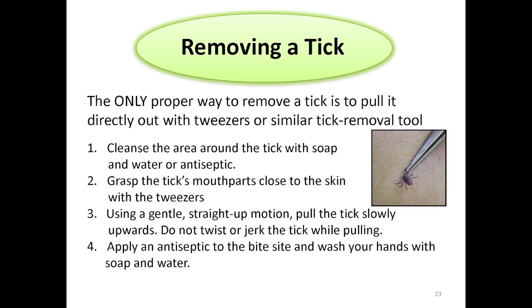The proper way to remove a tick is to pull it directly out with tweezers. First, clean the area around the tick with soap and water or antiseptic. Next, grasp the tick close to the skin with tweezers — this will help you get a clean removal. Using a gentle straight-up motion, pull the tick slowly upwards. Do not twist or jerk while pulling. After you have removed the tick, apply an antiseptic to the bite area and wash your hands with soap and water.